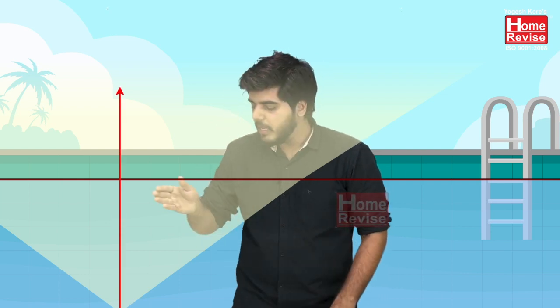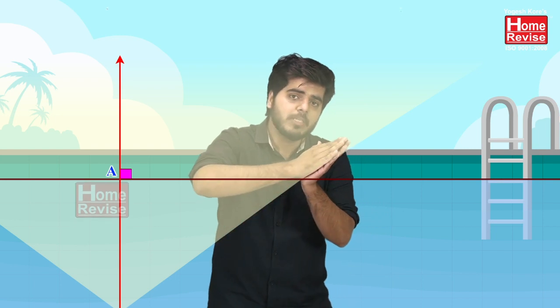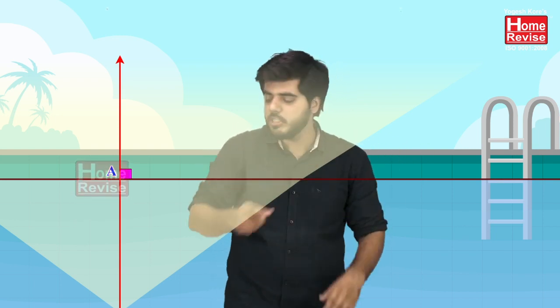The source emits its first ray straight — perpendicular to the surface. Light that strikes the surface at 90 degrees does not bend at all; it passes straight through. So the first ray struck the surface at point A and went straight through — that is our first ray.